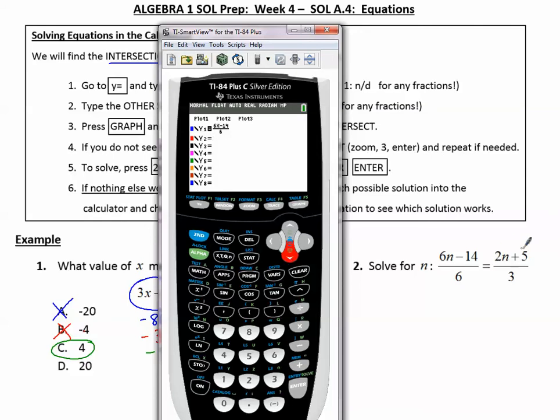In y sub 2, I'm going to type the other fraction. So again, alpha y equals, enter, and now 2x minus, whoops, let's go back, plus 5, and the denominator says 3.